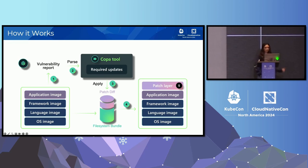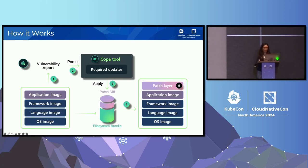The way Copa works is you'll start with your image on the left, and it's made up of different layers like the OS layer, language, framework, and application. But we focus on the OS layer and OS vulnerabilities. After we generate a report using a tool like Trivy, we can pass that into Copa. Copa will parse the report to figure out which updates are required, then it applies those updates and creates a diff from the file system bundle. It uses this and BuildKit's diff and merge operation to create a patched layer on the right and appends that to the original image.